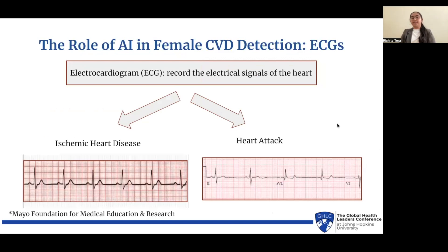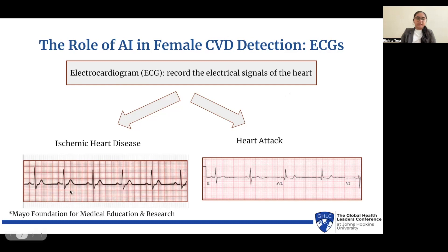The specific role of artificial intelligence in female CVD detection can be seen through the use of electrocardiograms, or ECGs. ECGs are tests that monitor and record the electrical signals of the heart and identify arrhythmias — variations in rhythm not seen in a normal, properly working heart. The use of ECGs can detect specific types of CVD as well. As you can see, the ECG showing ischemic heart disease looks very different from that of a heart attack, demonstrating how ECGs identify not just irregular rhythms but also the specific type of CVD someone may be experiencing.